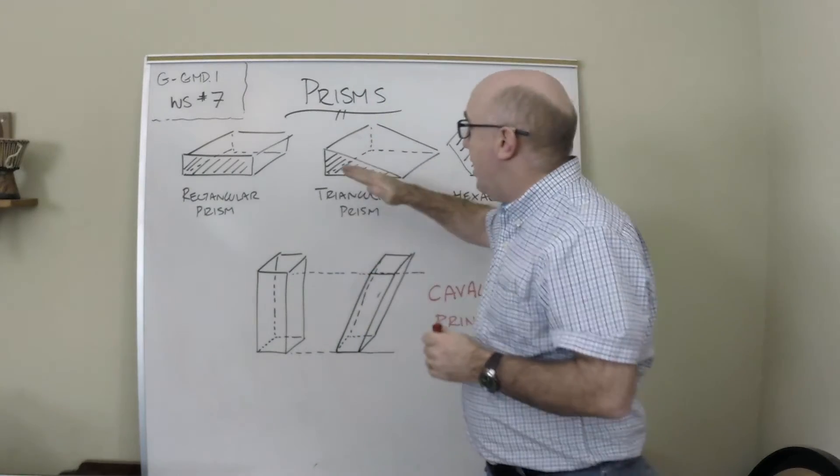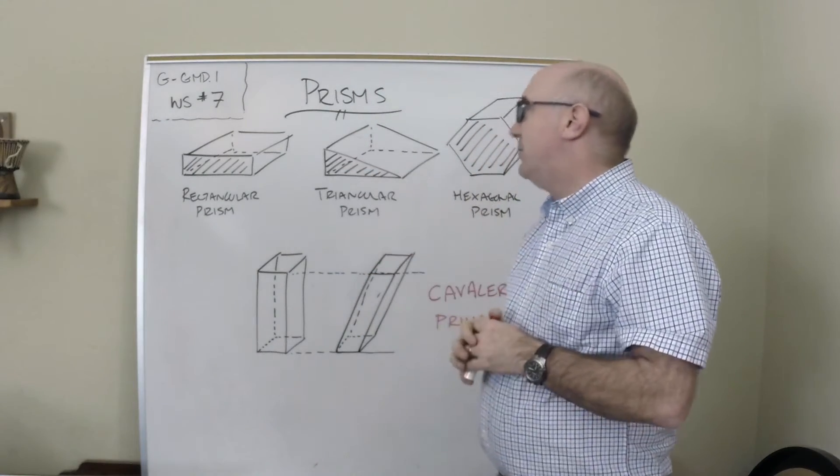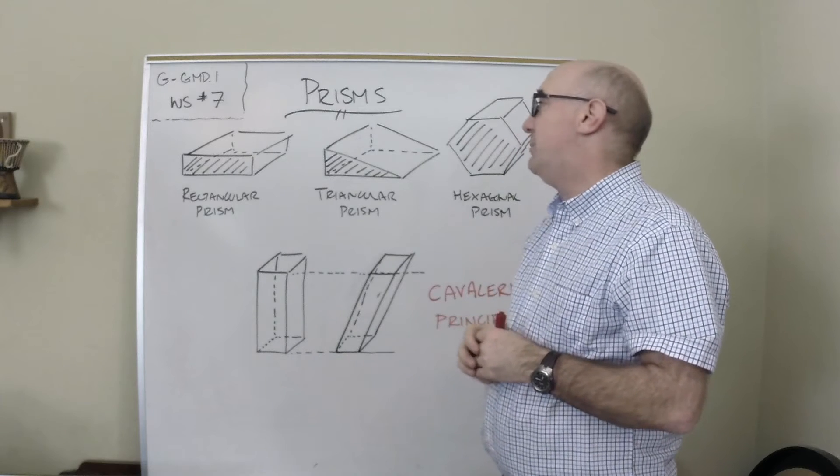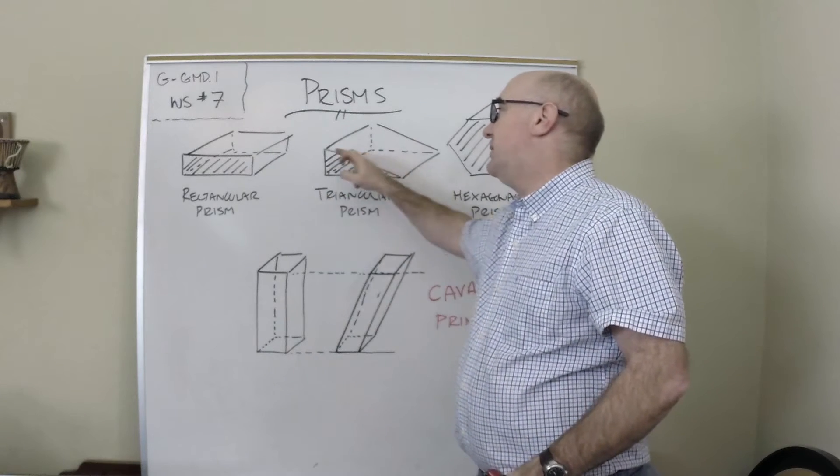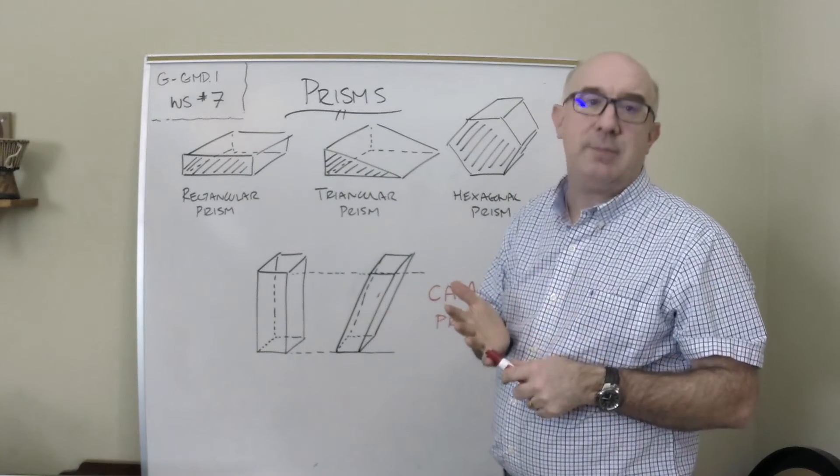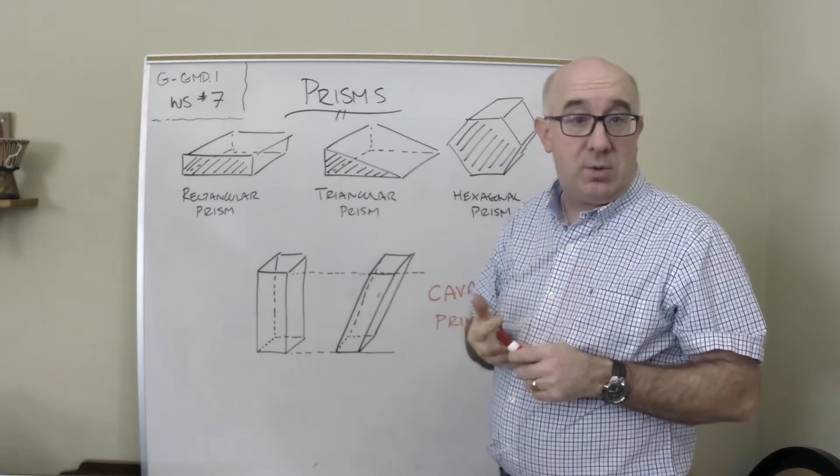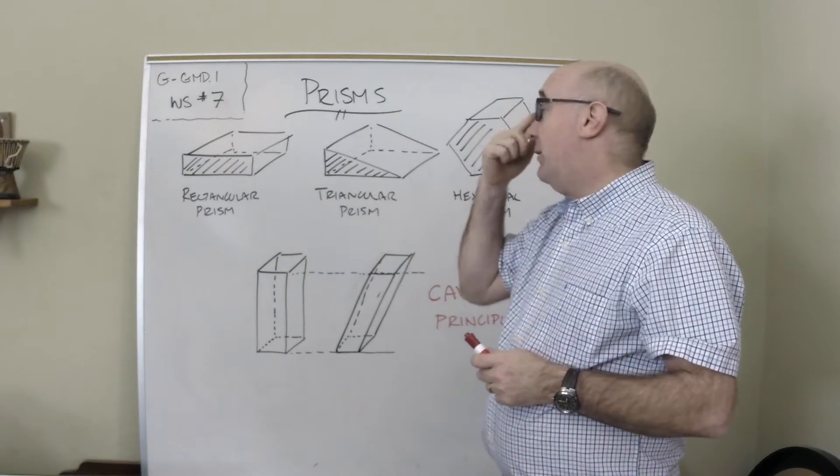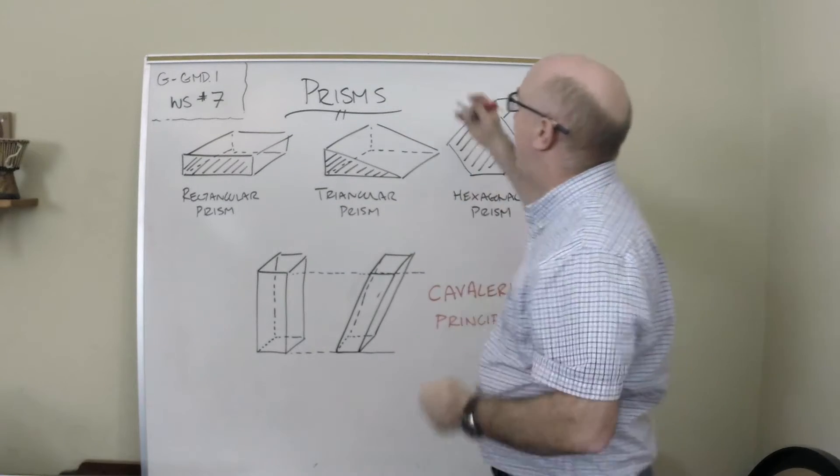Always, because if you have two identical bases, the lines that connect it will actually—parallelograms are possible, rectangles, squares, and so on. But all of the shapes we're going to look at are going to be right prisms.